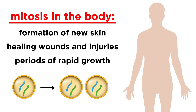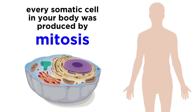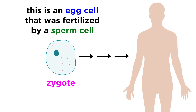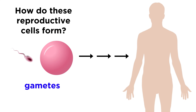Your body is constantly producing new cells by mitosis to make new skin, heal a wound, or when you grow rapidly in childhood. Every single somatic cell in your body was produced by mitosis, except the very first one. This first cell is an egg cell that has been fertilized by a sperm cell, and these reproductive cells, or gametes, are produced by a different process, so let's learn about that next.